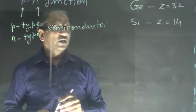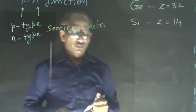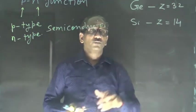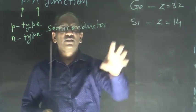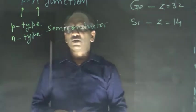So the atomic structure with these atomic numbers of these two silicon and germanium are known as intrinsic semiconductors.